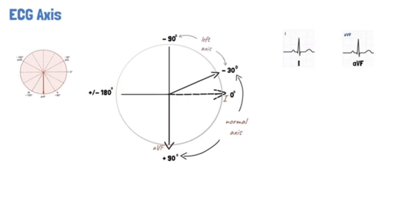Right axis deviation is said to be present if the major QRS vector is between plus 90 and 180 degrees. While if the QRS vector is between 180 and minus 90 degrees, the axis is referred to as extreme axis deviation, or indeterminate axis.